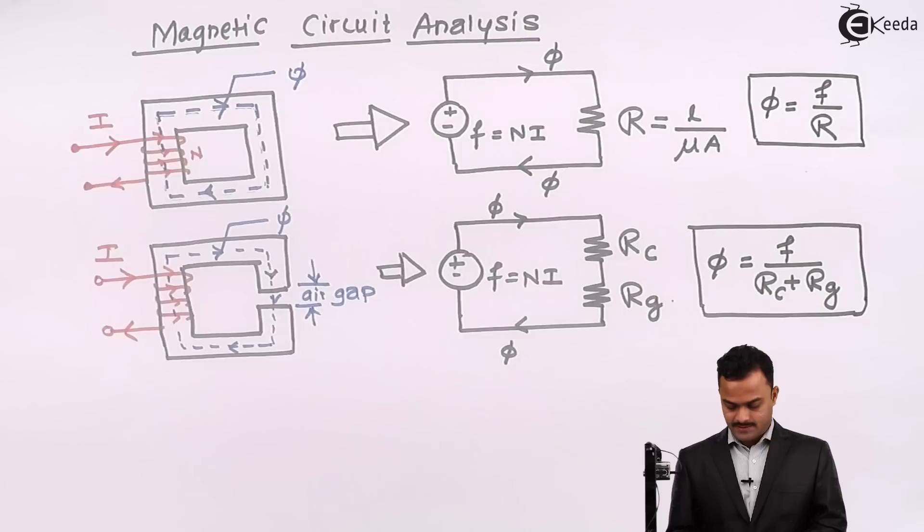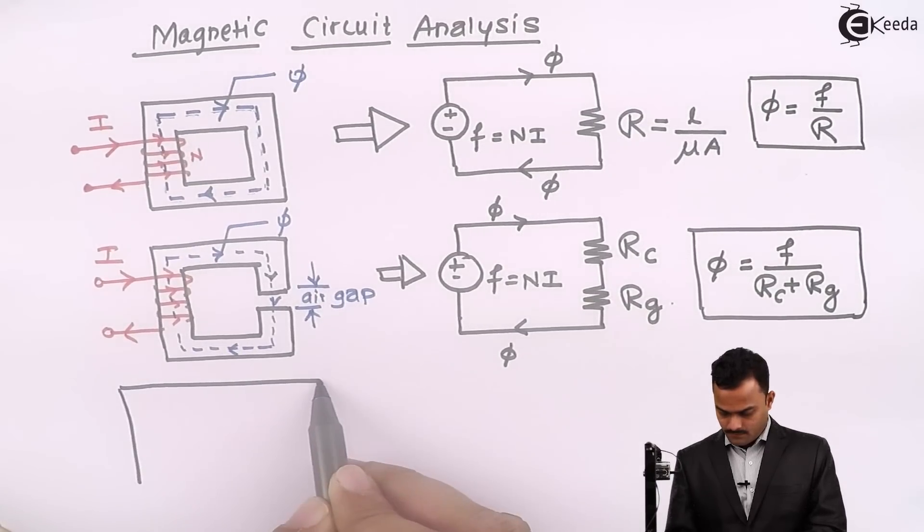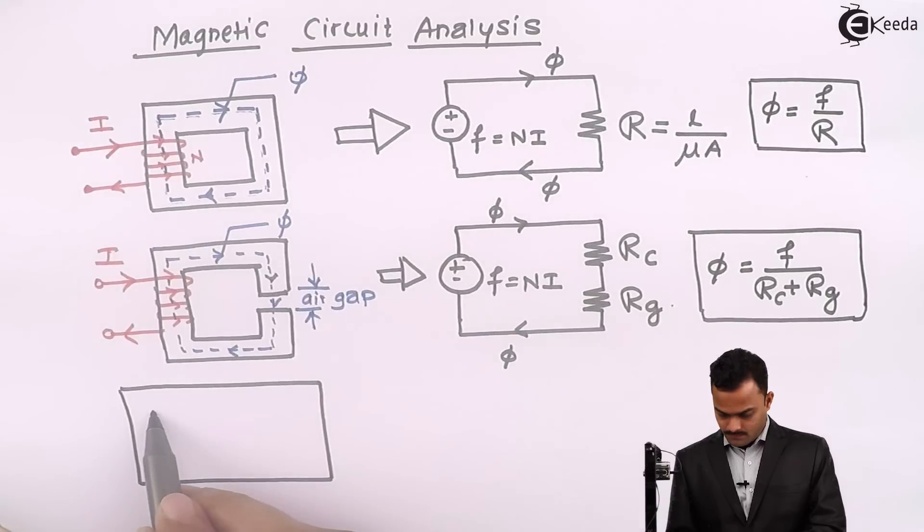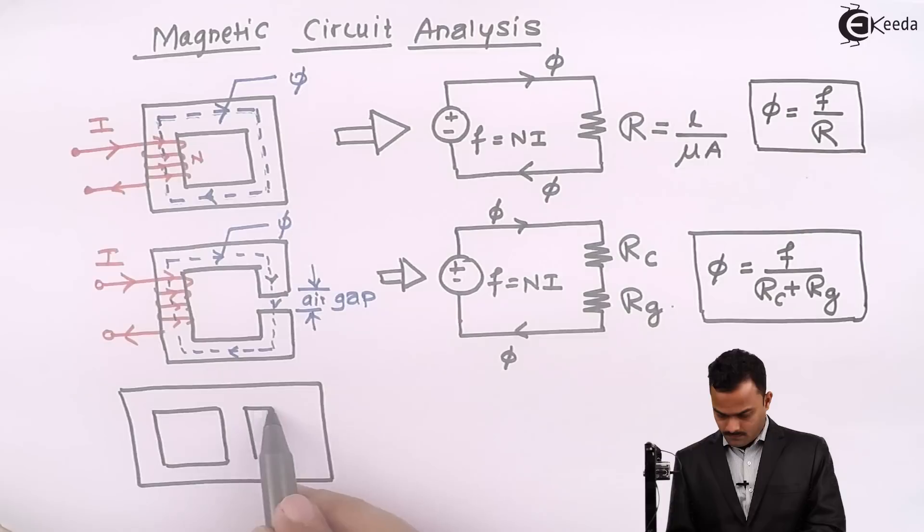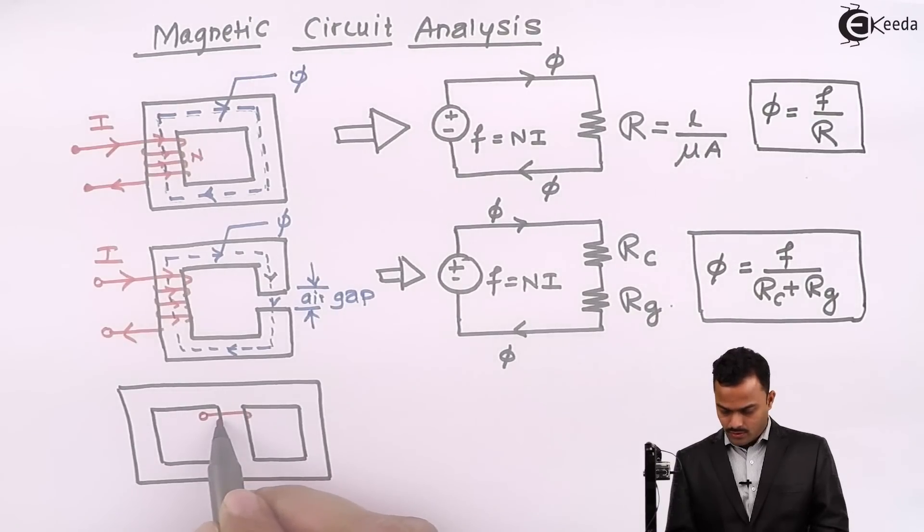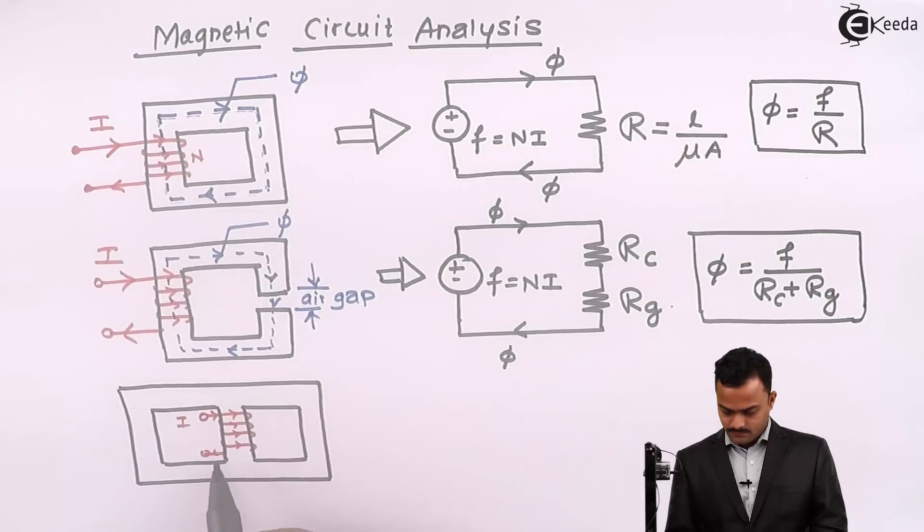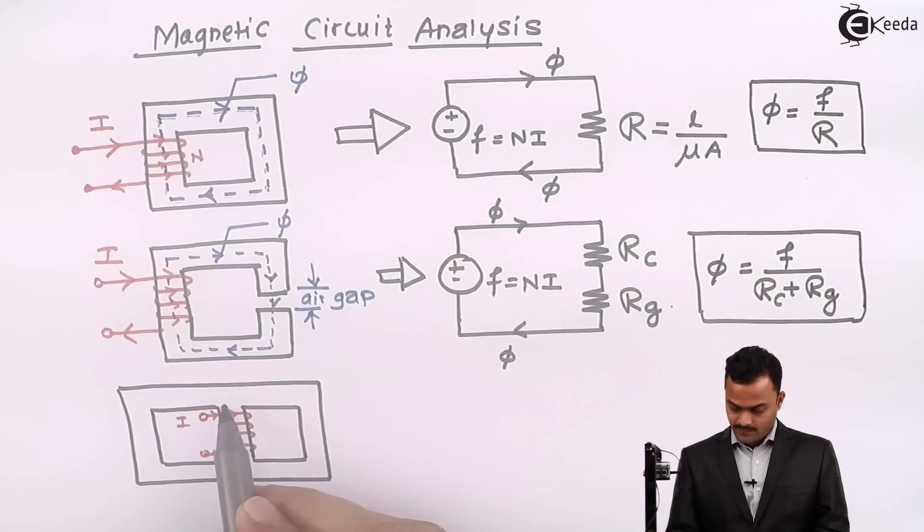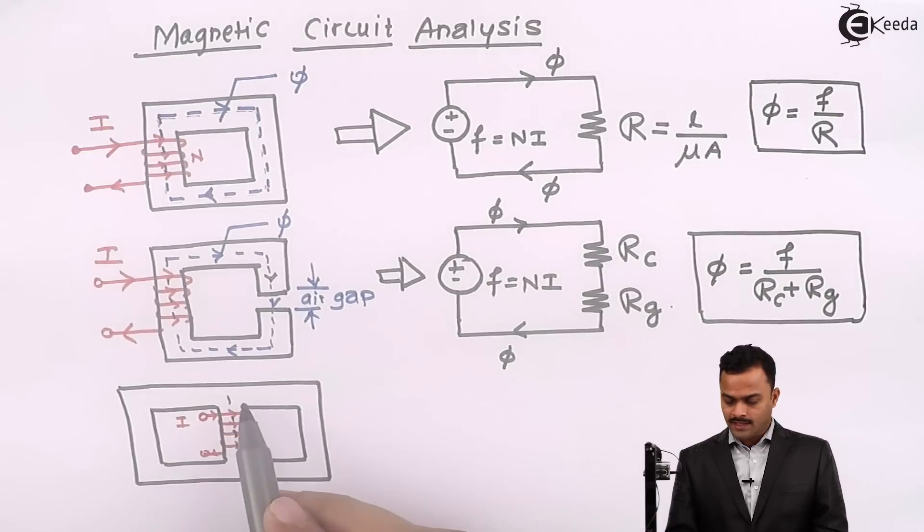Let's have one more circuit. This time I am having a circuit like this. Winding is wound on the central limb carrying the same current I in this direction. Obviously, it will produce a flux φ. Now, based on the length and area of cross section,